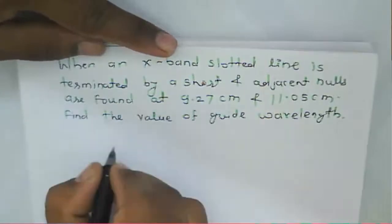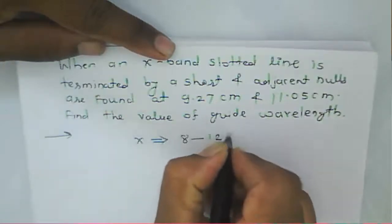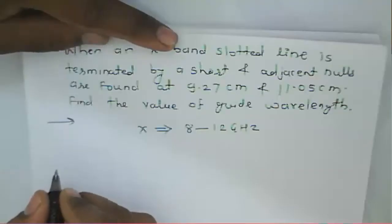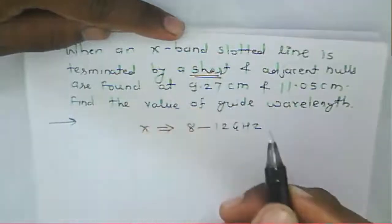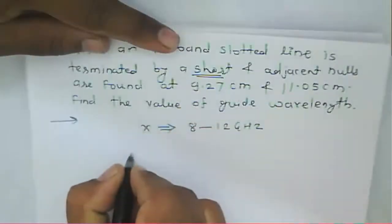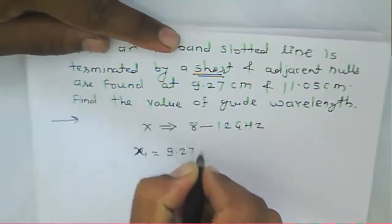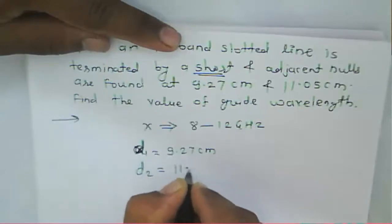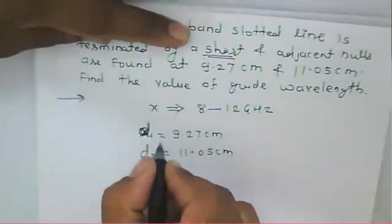The expanded slotted line operates at 12 GHz. The slotted line is terminated by a short. When terminated by a short, we get adjacent nulls. That adjacent null is nothing but x1. x1 equals 9.27 centimeters, and we have d1 and d2 where d2 equals 11.05 centimeters.